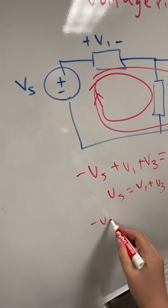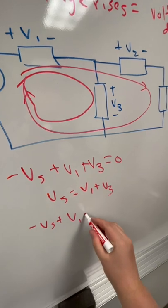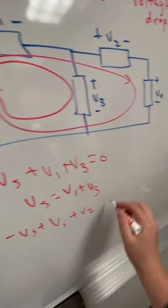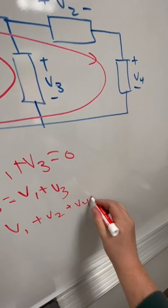I've got minus Vs plus V1 plus V2 plus V4, and that has to add up to zero.